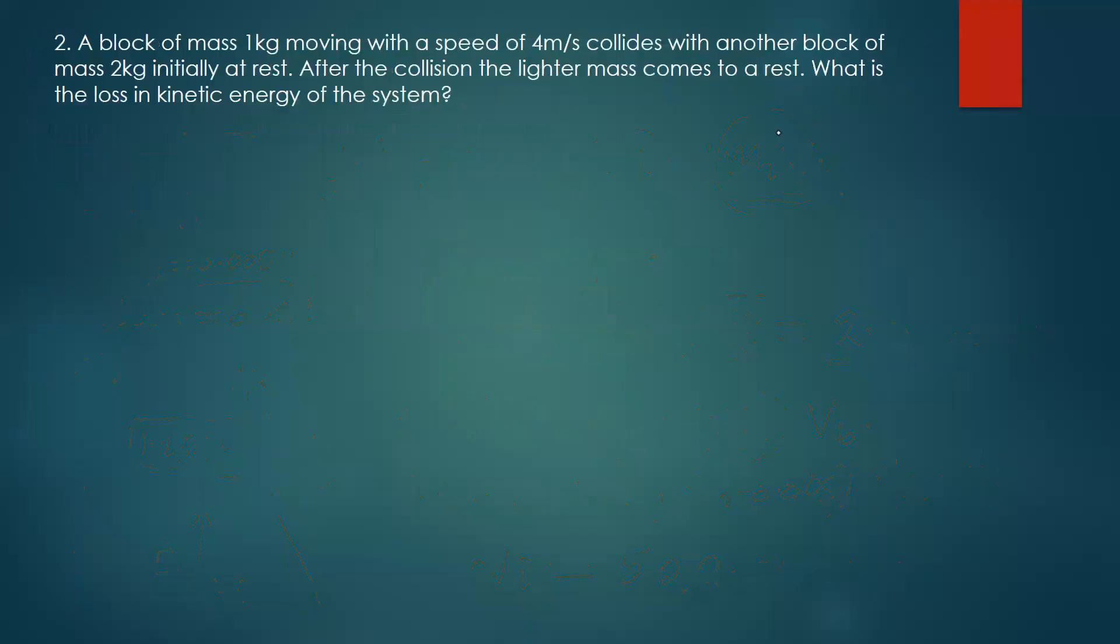The second question is: a block of mass 1 kg moving with a speed of 4 meters per second collides with another block of mass 2 kg which is initially at rest. After the collision, the lighter mass comes to rest.